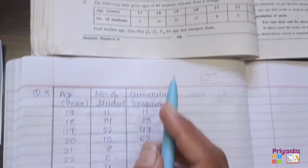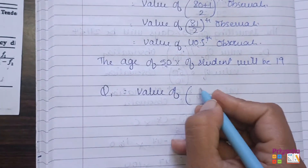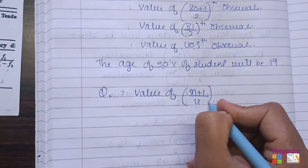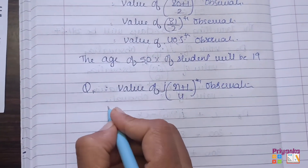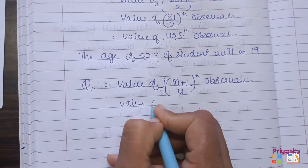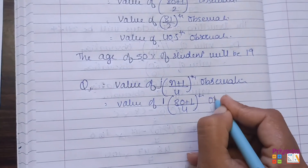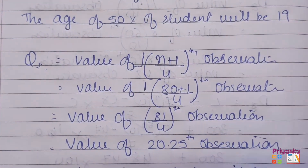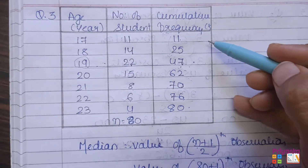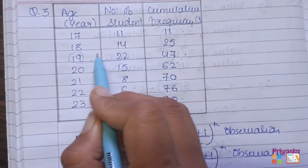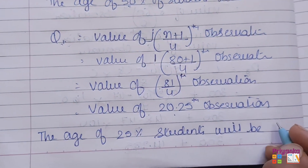Next, they ask us to find Q1, which represents 25%. For Q1, we write down the value of j(n+1) divided by 4 for the observation. J means the number we are finding, which is 1 for Q1. That is 80 plus 1 divided by 4. The calculation gives 20.25. Going back to cumulative frequency, 20.25 falls between 11 and 25. So the age of 25% of students is 18.